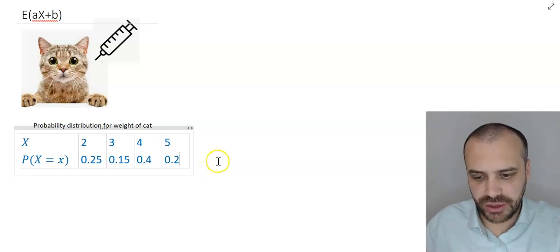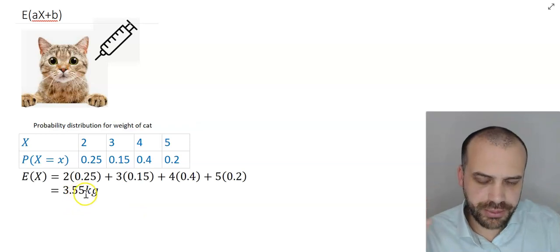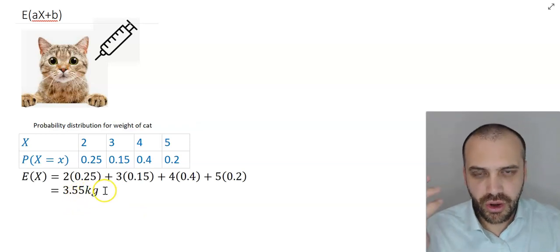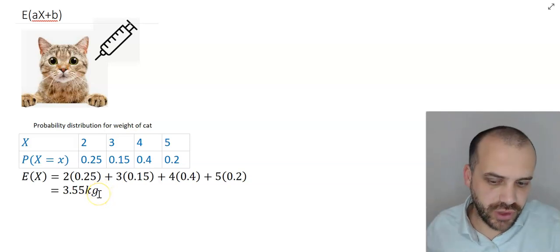So we can find an expected value for the weight of the cat by multiplying all of these, this times this, this times this, and adding them all together. So we get an expected value of 3.55 kilograms. On average, cats walking into this vet weigh 3.55 kilograms.